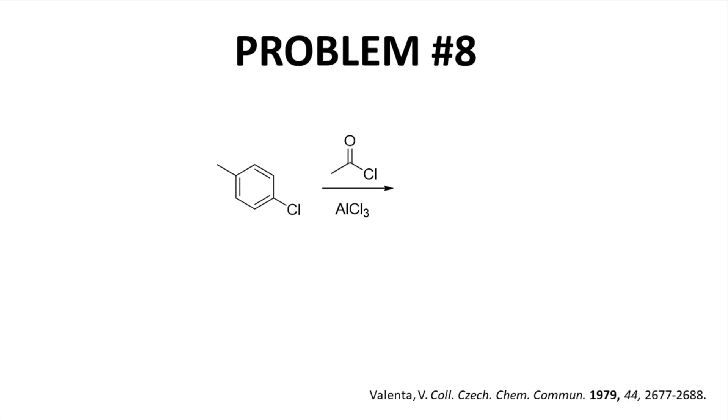Next question. Once again, two groups on the ring. Now it's a methyl and chloro. This is actually a lot like question six, which had the methyl and methoxy. The methyl will favor ortho. The chloro will favor ortho. All four unsubstituted carbons will be activated. So what was observed as the product?